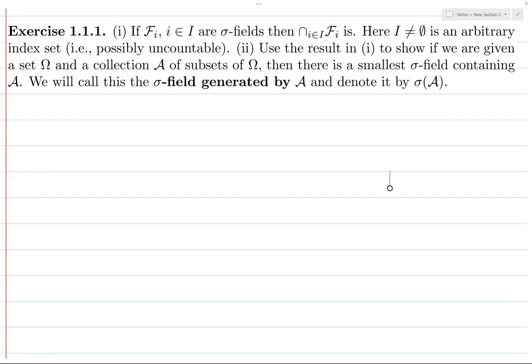Let's talk about probability theory, although at this point in the textbook we're really talking about measure theory, because that's sort of where probability theory seems to start. We have a bunch of sigma fields or sigma algebras. Looking at the textbook, there are some exercises where they say sigma field and somewhere they say sigma algebra, so I'll probably do what the textbook does and not be consistent. This exercise uses sigma field a lot, so let's go with that.